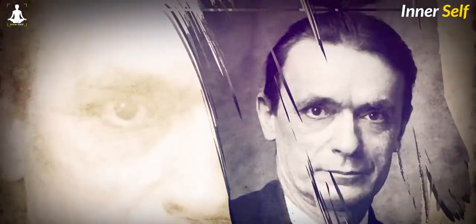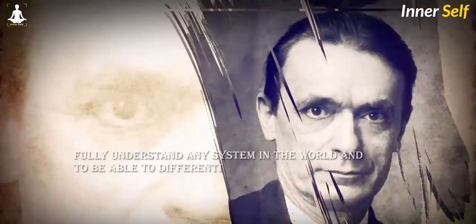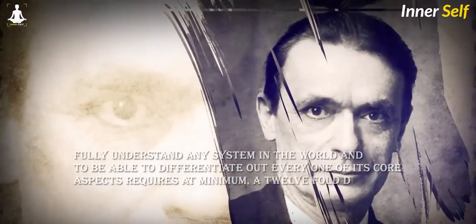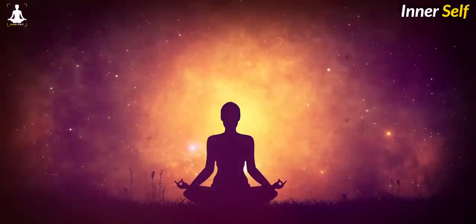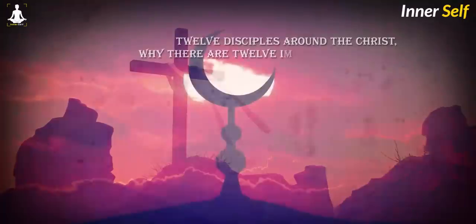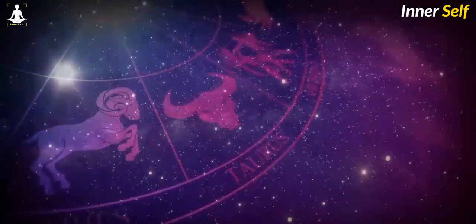There was an interesting statement by the great Rosicrucian teacher Rudolf Steiner, where he said to fully understand any system in the world and to be able to differentiate out every one of its core aspects requires at minimum a 12-fold division. This is a classical teaching from great spiritual and healing traditions in the world. That's why there are 12 disciples around the Christ, why there are 12 imams in Shia Islam, why there are a division of the stars into 12 signs of the zodiac around the sun. It's 12 around the one.